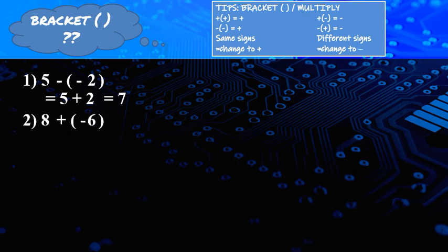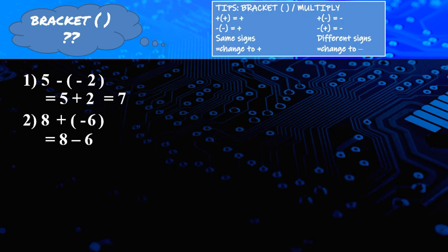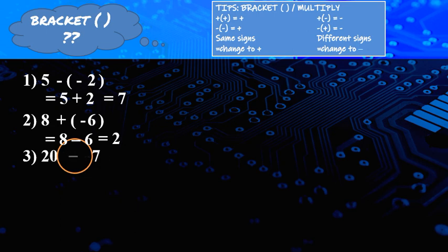Question 2: 8 plus (negative 6). Plus and negative — different sign — change into minus. It becomes 8 minus 6 equal to 2. Question 3: 20 plus (negative 7). Plus and minus — different sign — change into minus. It becomes 20 minus 7 equal to 13.